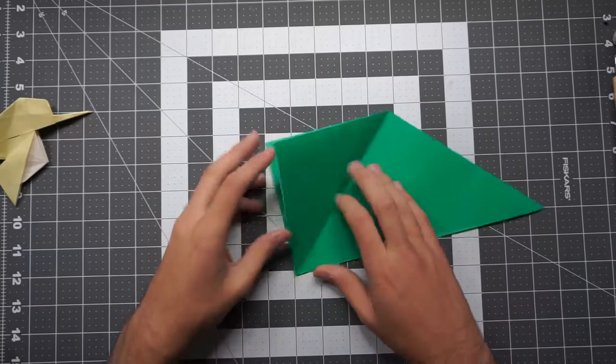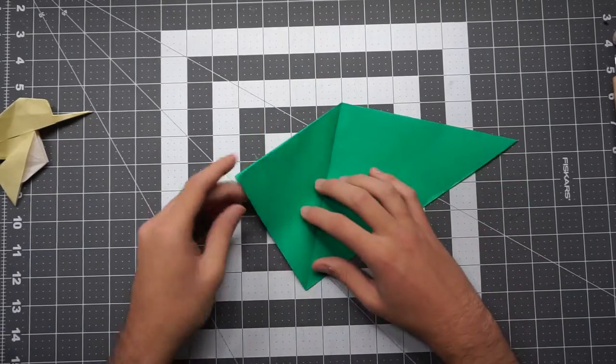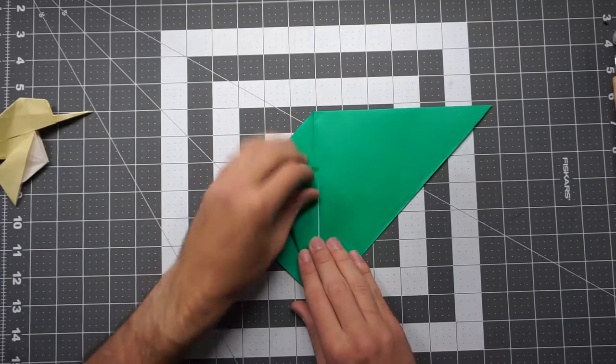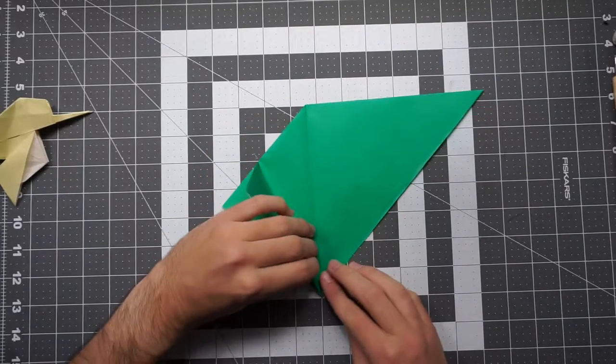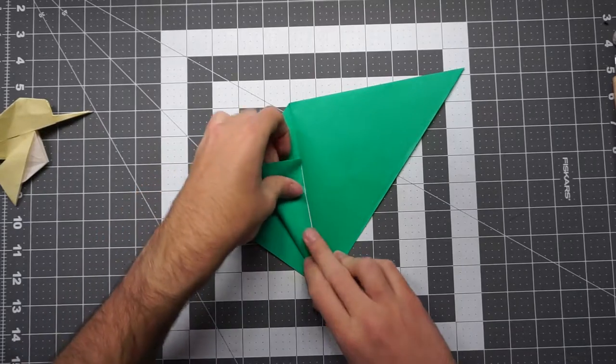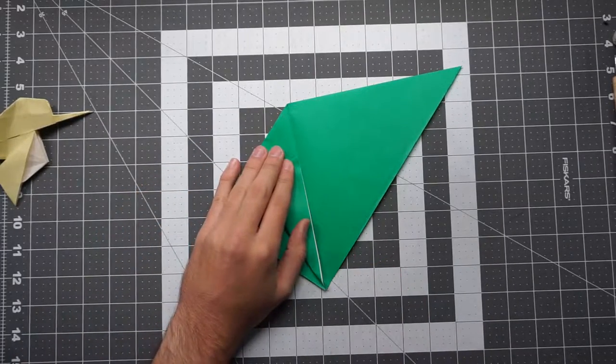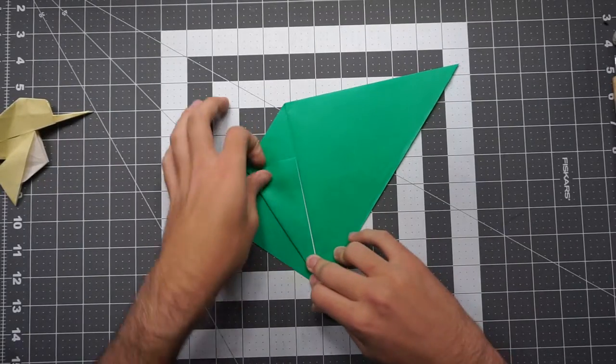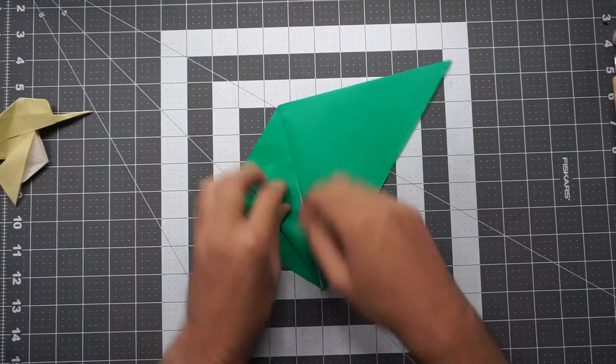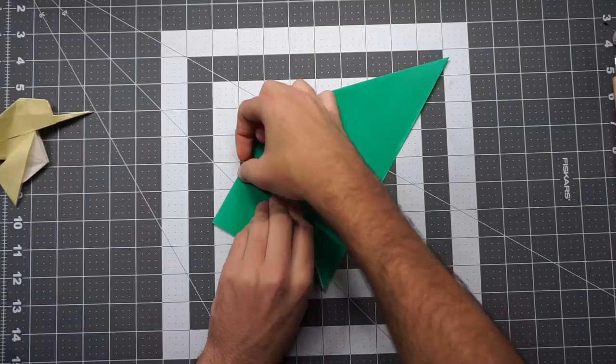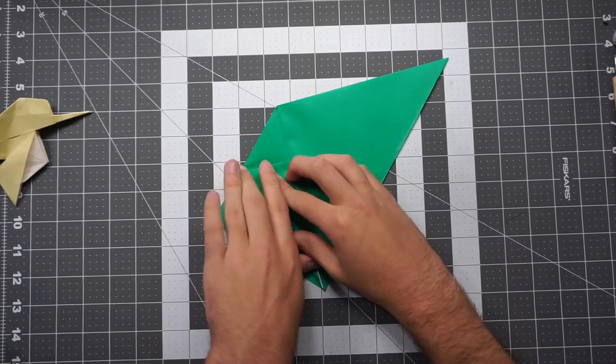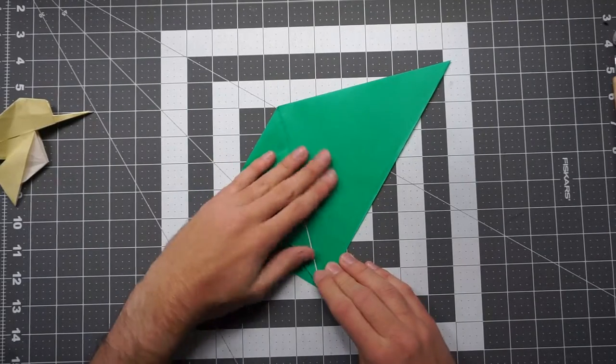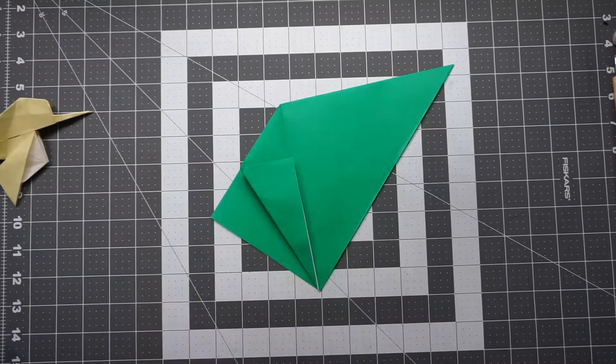Alright. So from the open end down here, so from this end here, you want to take this edge and fold it to the center. Let's get that straightened up a little bit nicer.